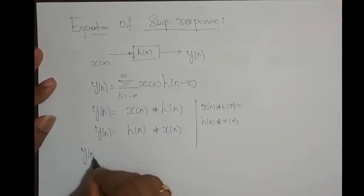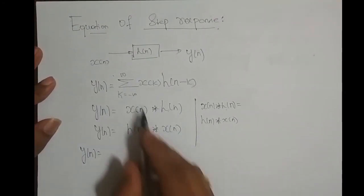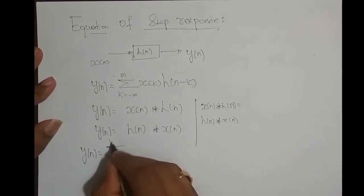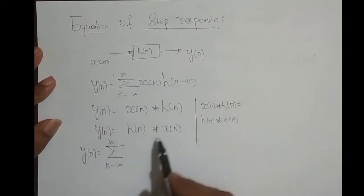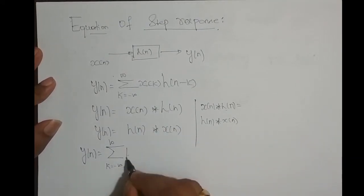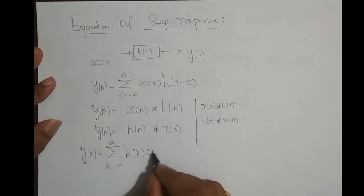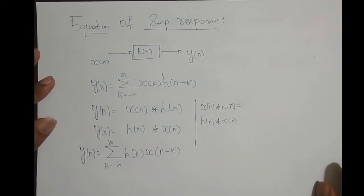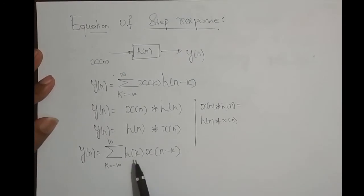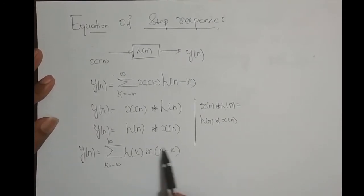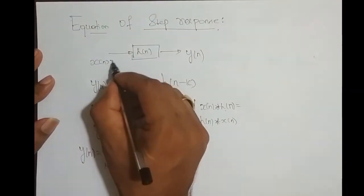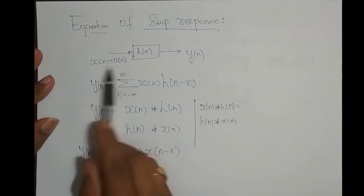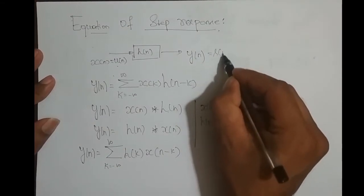Now, expanding this commuted convolution gives summation from k = −∞ to ∞ of h(k)·x(n−k). To find the step response, instead of feeding x(n) as input, I feed u(n) — the unit step function. So when the input is the unit step function, the output I get is the step response.